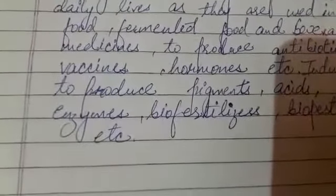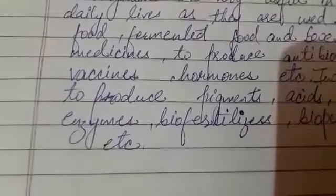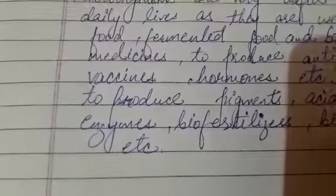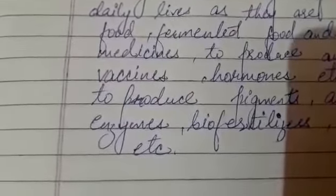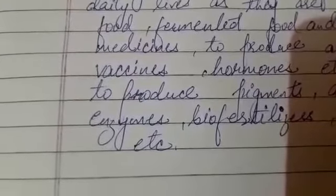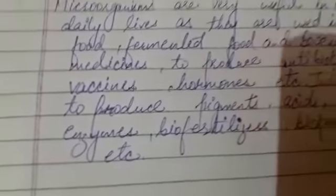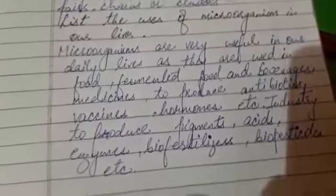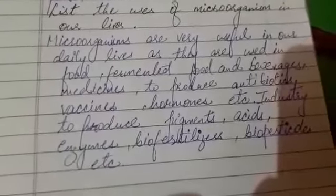If we are talking about vaccines, our body has its own system of fighting against disease-causing bacteria — that is our immune system, which helps us to fight with such disease-causing pathogens. But with the help of vaccines, some weak pathogens are introduced into our body which help to fight against such diseases. In these variable ways, microorganisms are useful to us.